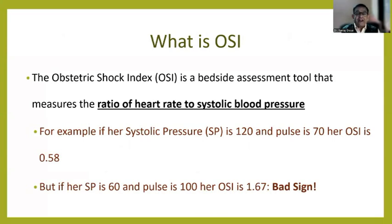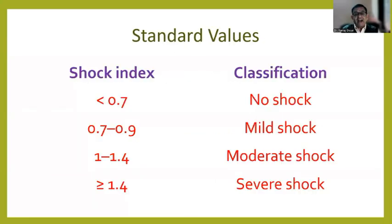Let me clarify it by an example. If the systolic pressure is 120 and pulse is 70, her OSI will come to 0.58. But if her systolic pressure is 60 and pulse is 100, her OSI is 1.67 — a bad sign.